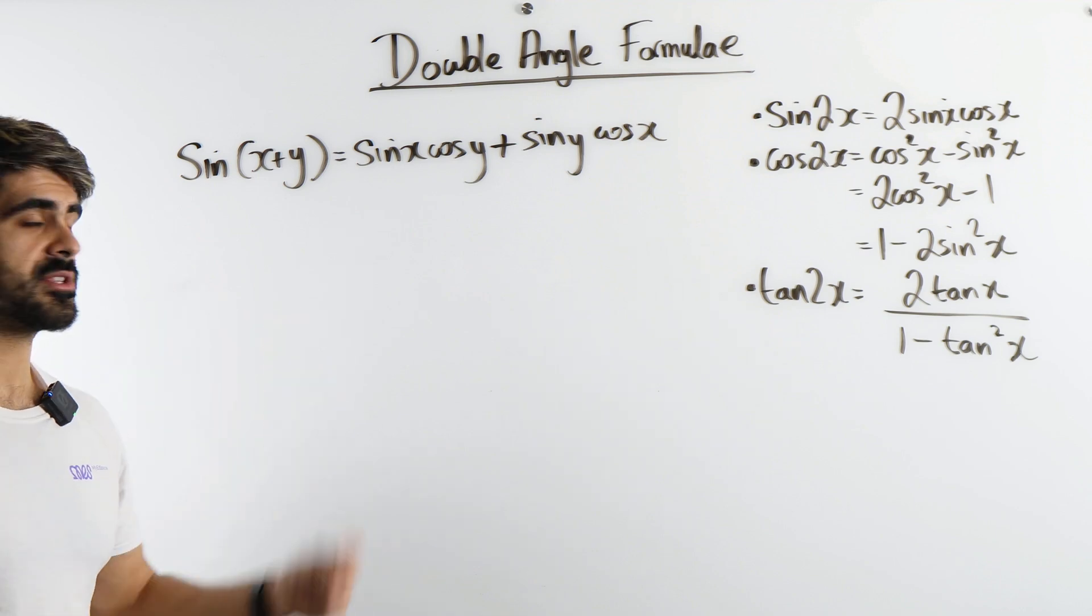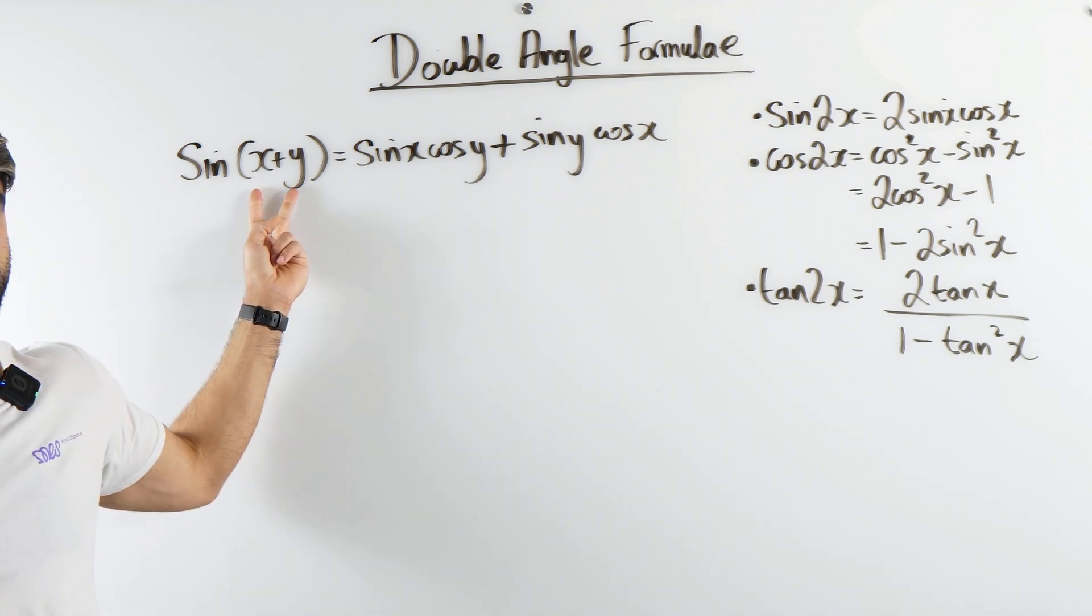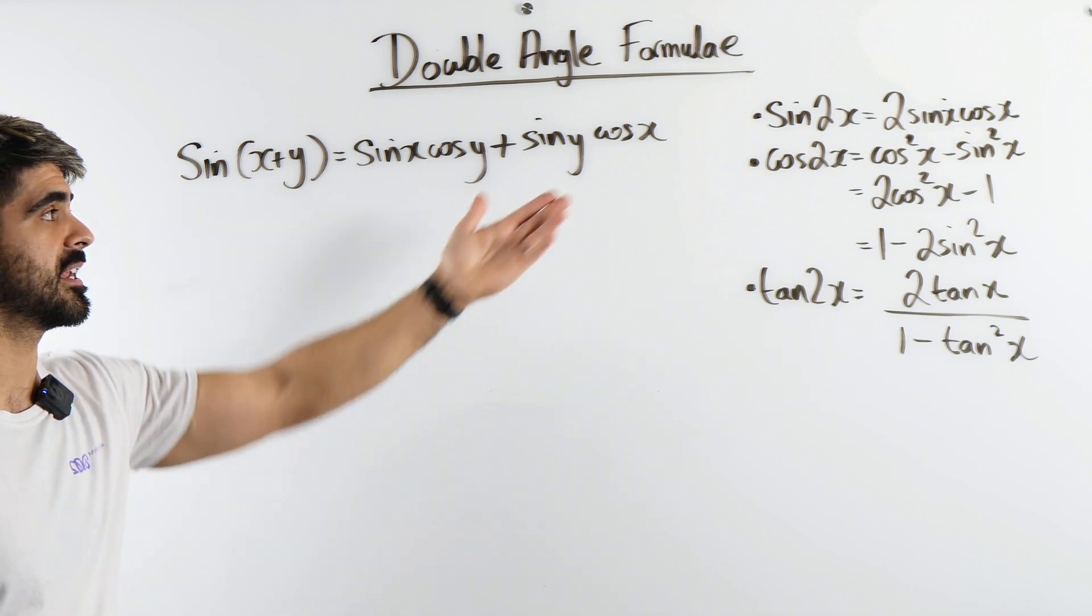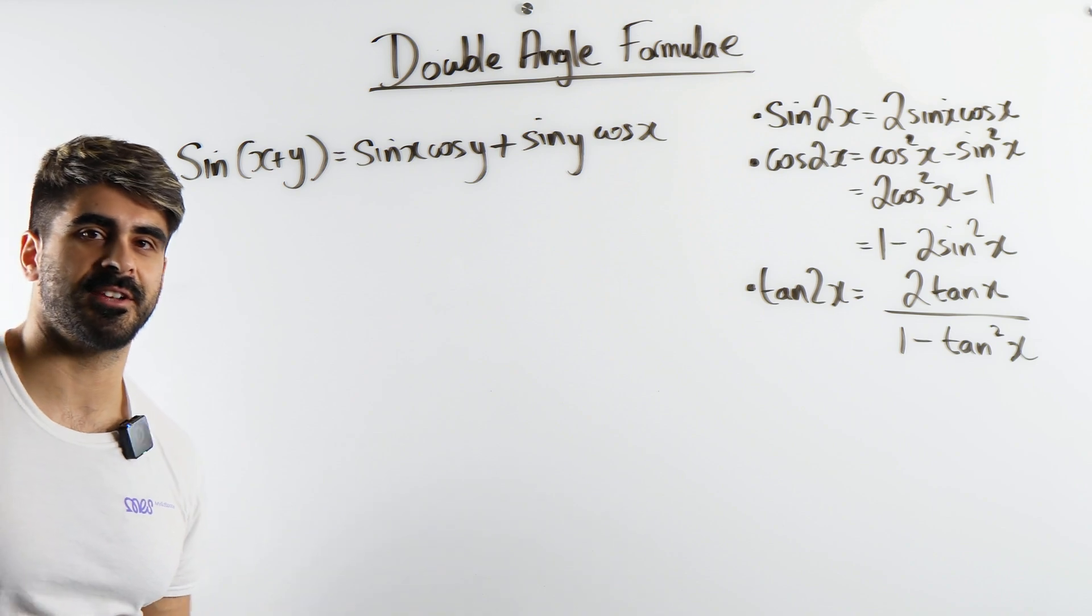And the reason we need it to be plus is because for the double angle IDs we're going to need these to be the same and they add to make 2x. If it was a minus, they would cancel out to give you 0 and you would actually end up with sin of 0 is 0. I guess it proves that sin of 0 is 0.